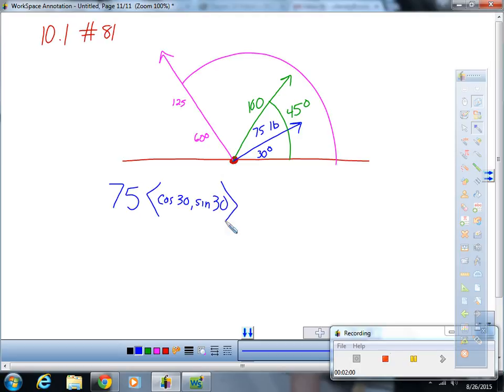And we can represent the green vector as 100 pounds times the unit vector in that direction. So, cosine of 45, comma, sine of 45. And then, we can represent the pink vector as...